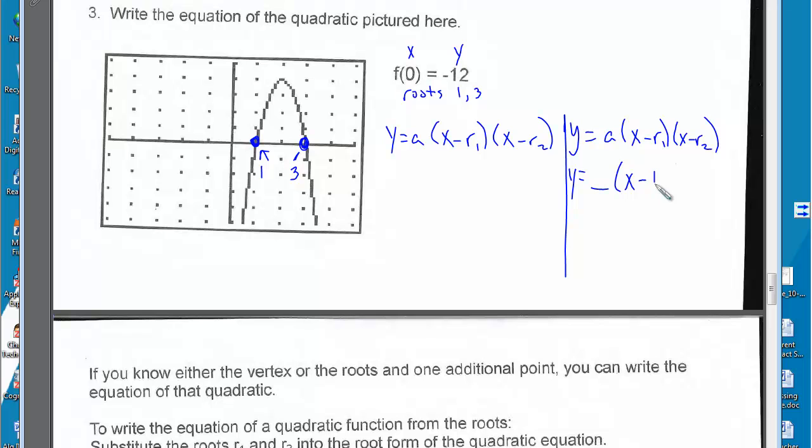But the roots are 1 and 3. Let's plug in the information on the left-hand side and solve for a. So y is negative 12. This is equal to a times the x value is 0 in this problem.